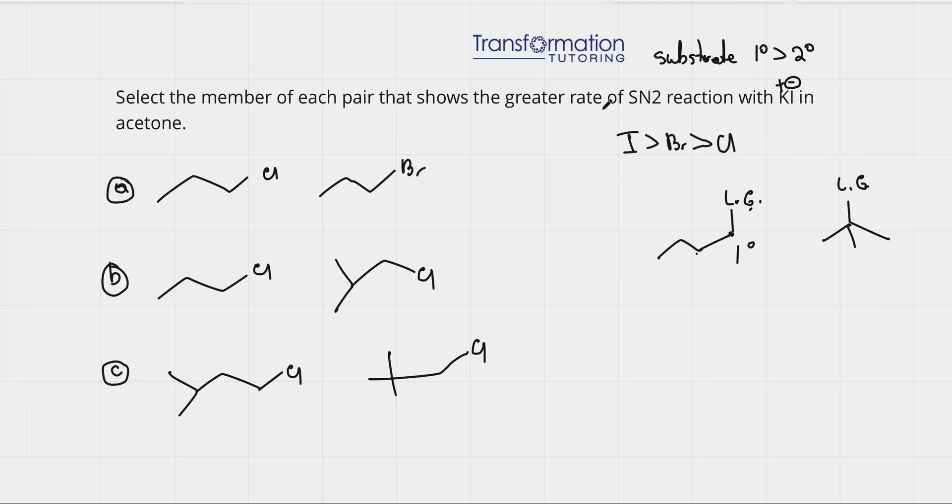Also, what kind of leaving groups do we like? Well, in terms of halogens, iodine is the best leaving group, then bromine, then chlorine. So, with that in mind,